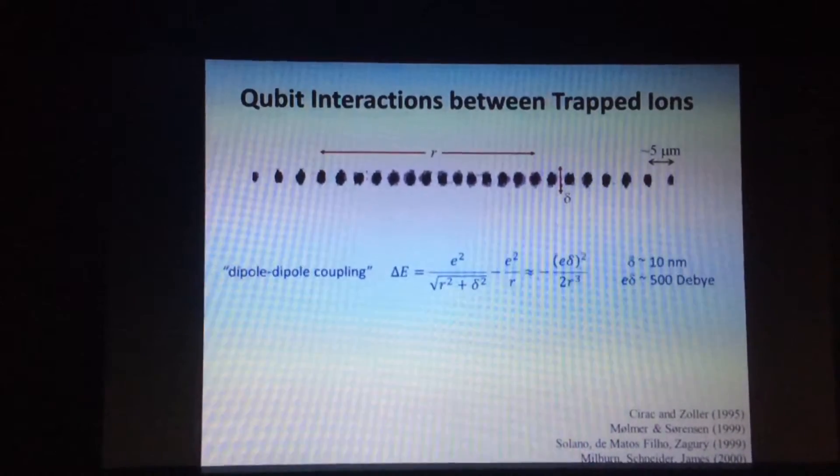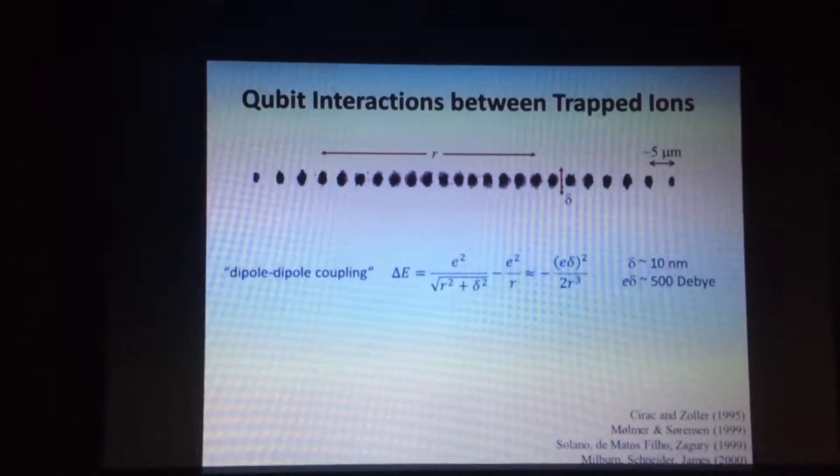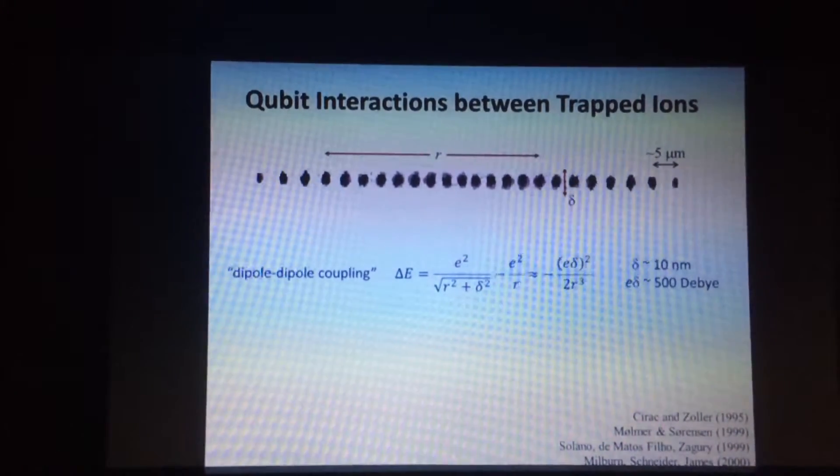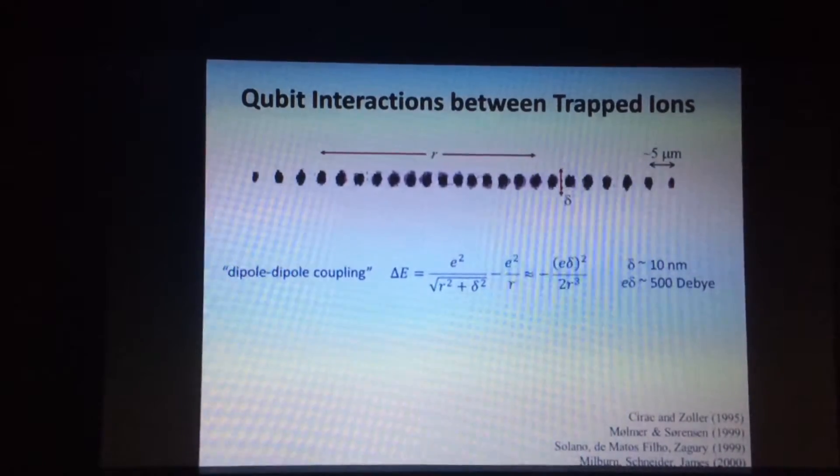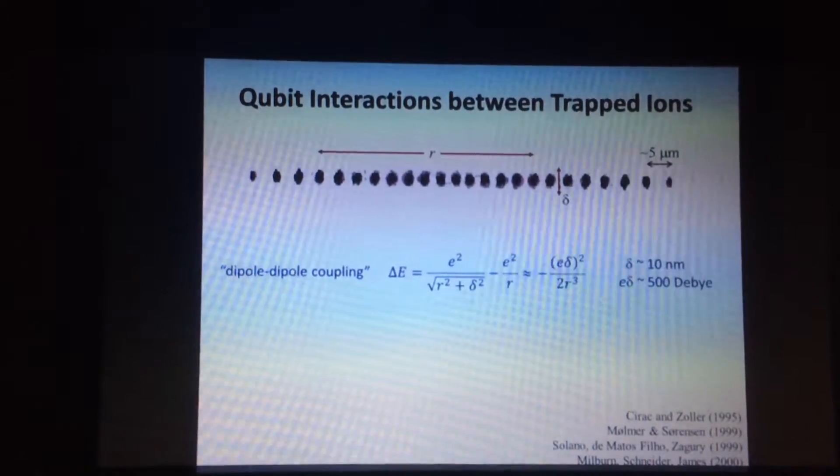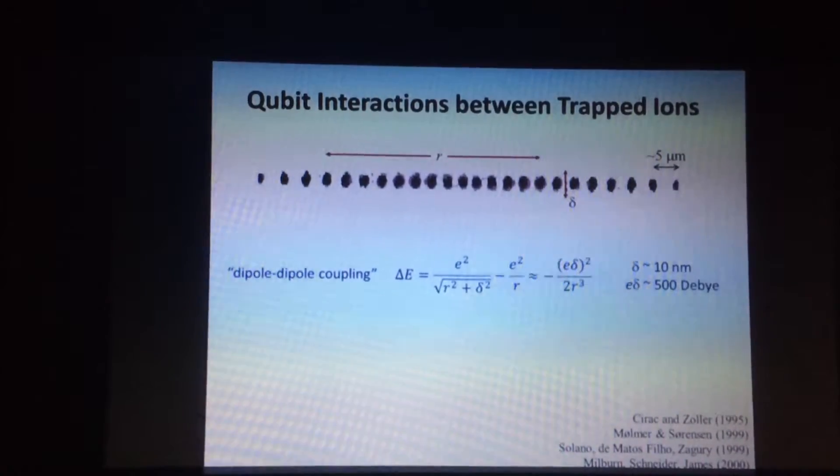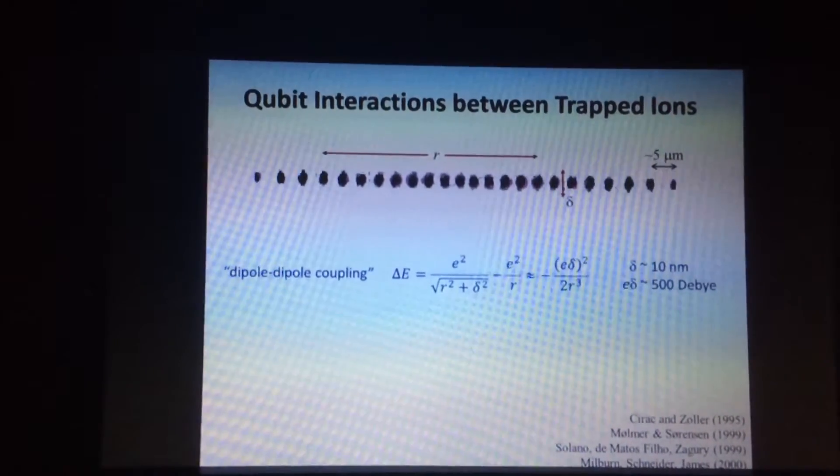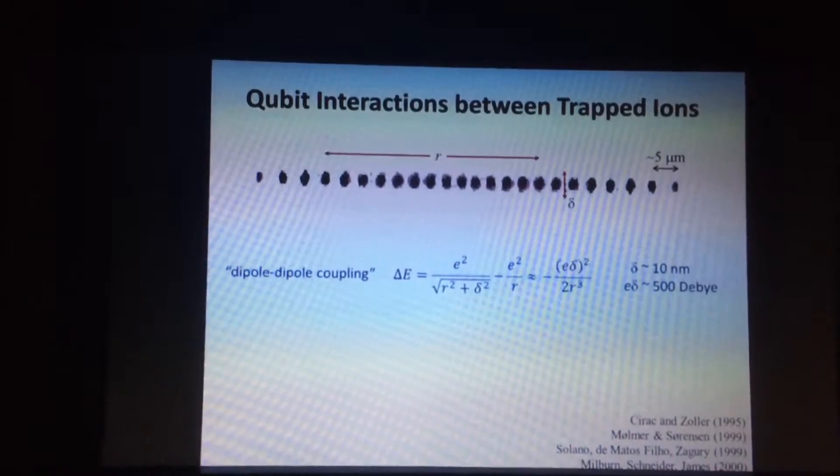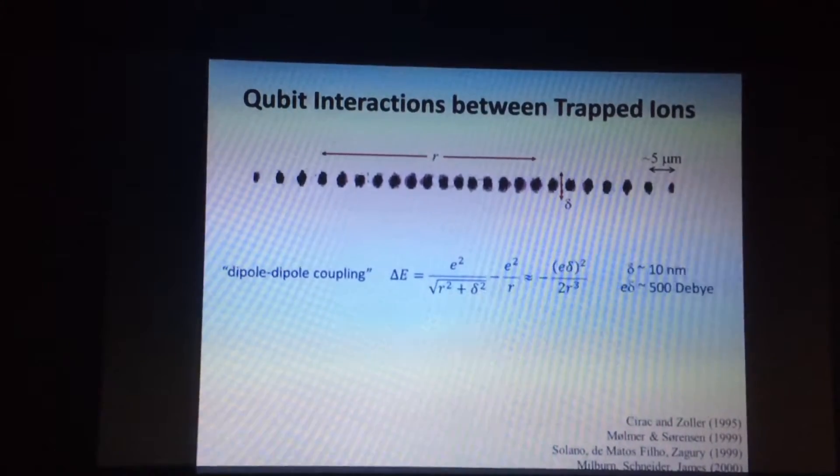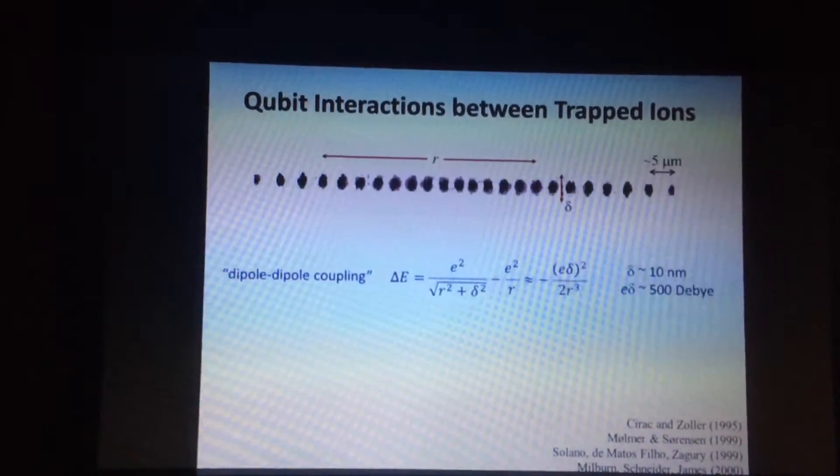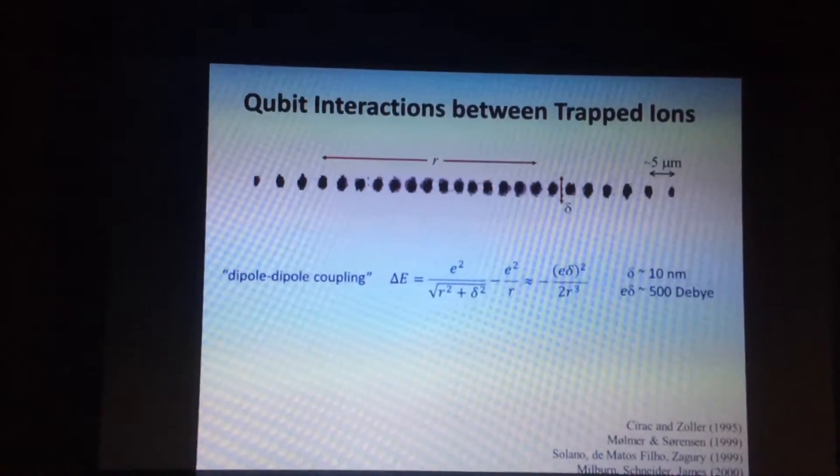So if you look at the math here, the change in energy, this is the Coulomb energy from when they're on this little diagonal here, minus their original Coulomb energy. And this is the expression. And in physics, this is known as a dipole-dipole interaction. We have an effective electric dipole. Charge of the ion times the separation, squared divided by R cubed. And these energies can be very large.